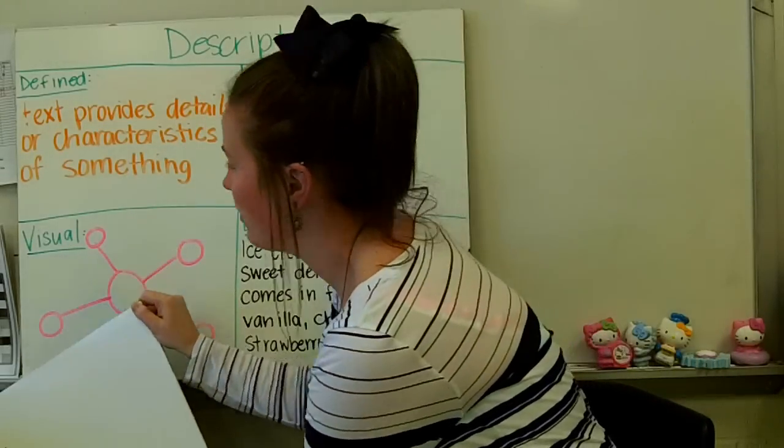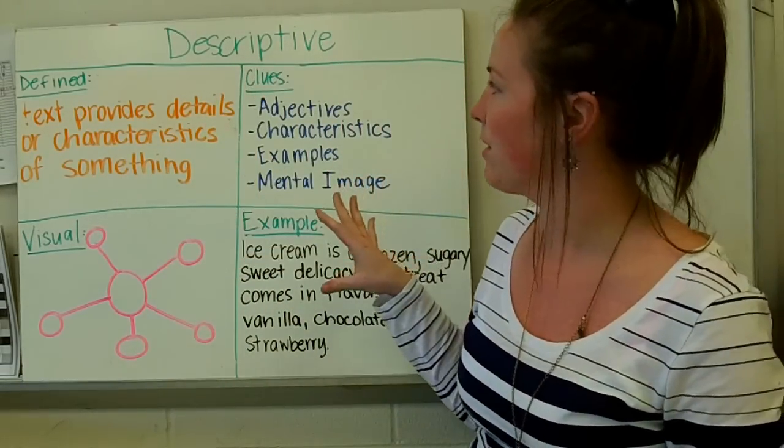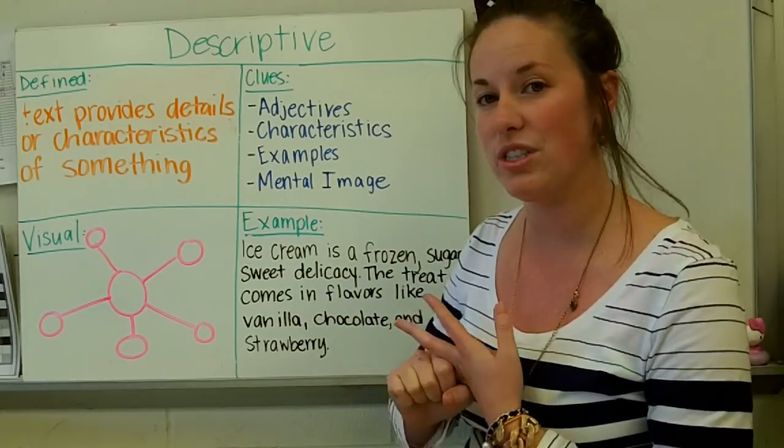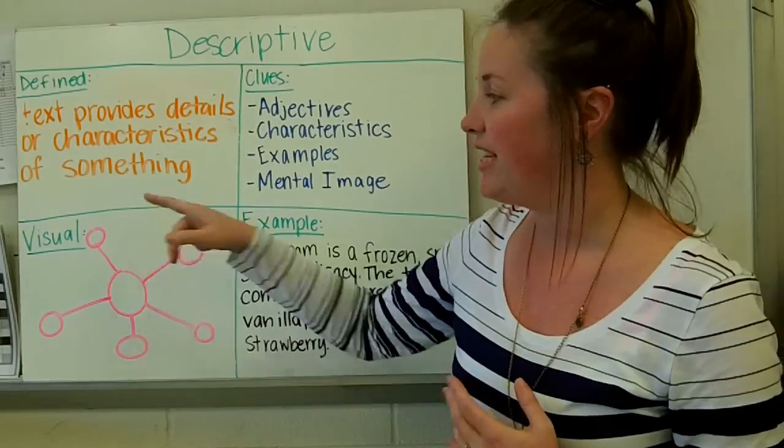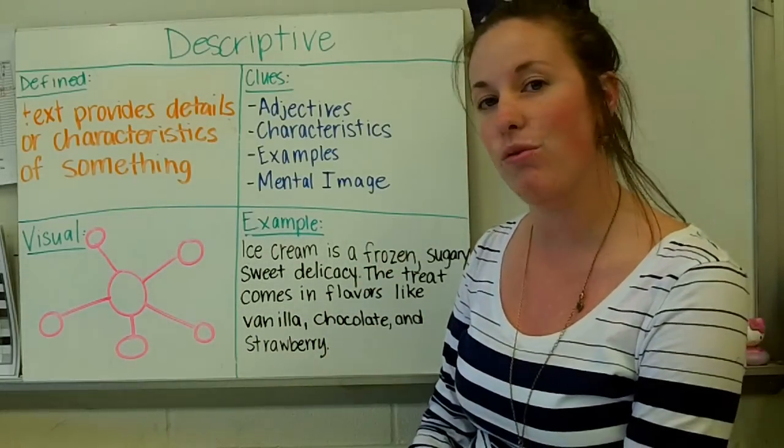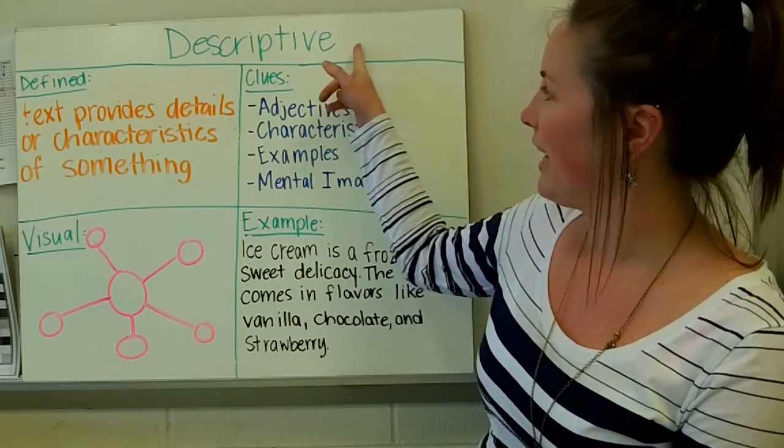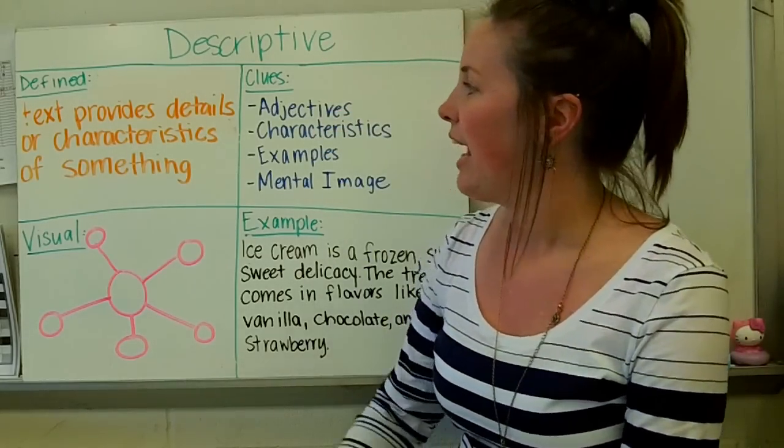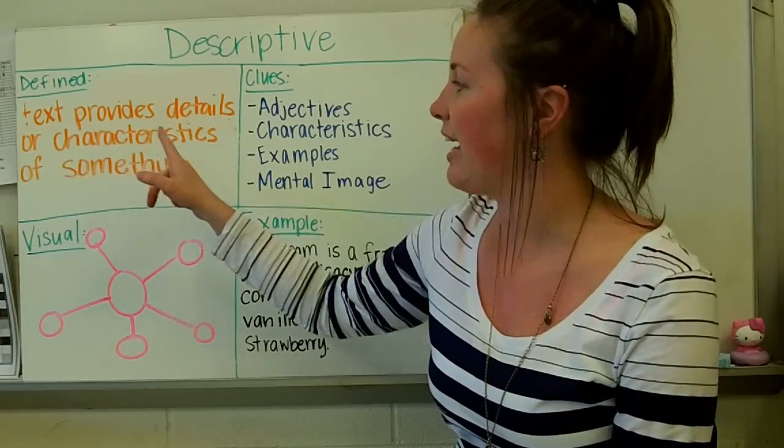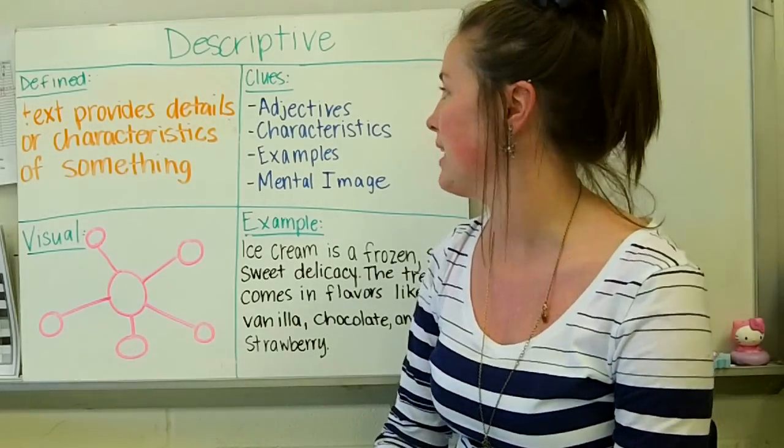The first one we are going to be talking about today is descriptive. And as you notice, I have everything set up. We're going to go over the definition, clue words that you can use in order to help you figure it out, a visual you could use if you were trying to map it out, and an example of what it would sound like if you were reading it in a text. So first off, like I said, we're talking about descriptive. And if you define descriptive, it means text provides details or characteristics of something. So pretty much your text is going to be describing something.